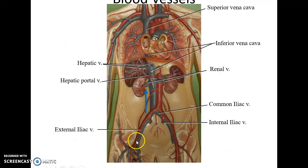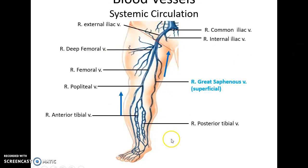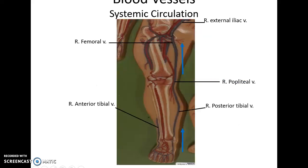The external and internal iliac veins drain into the common iliac veins, which drain into the inferior vena cava. In the legs, the posterior and anterior tibial veins fuse to become the popliteal vein, which becomes the femoral vein. The great saphenous vein — which is superficial — and the deep femoral vein fuse with the femoral vein to become the external iliac vein, which fuses with the internal iliac vein to form the common iliac vein.